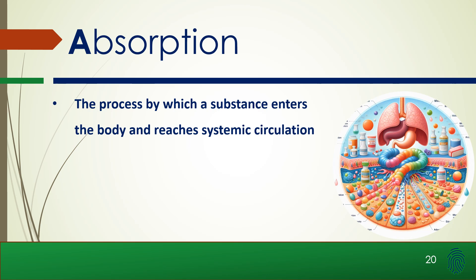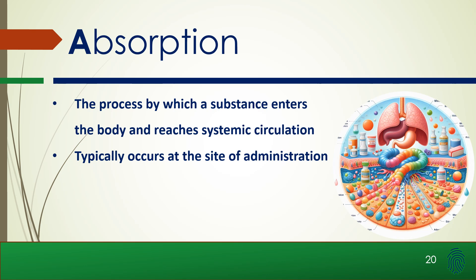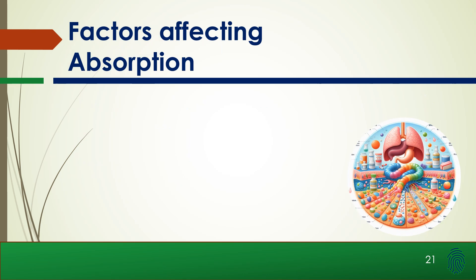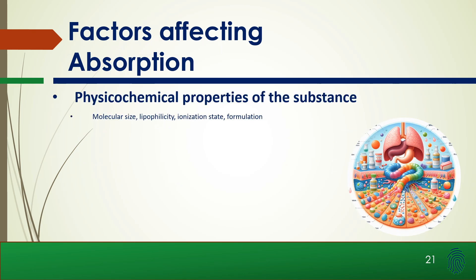Absorption is the process where the substance enters the body and reaches the systemic circulation system. It typically occurs at the site of administration — either oral, intravenous, or dermal. Factors affecting absorption include the physicochemical properties of the substance, specifically molecular size, lipophilicity, ionization state, or formulation.